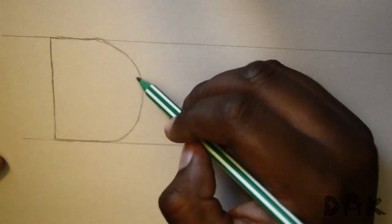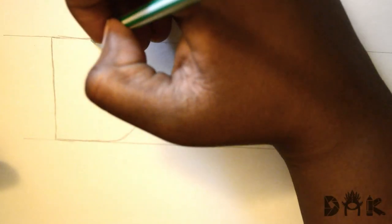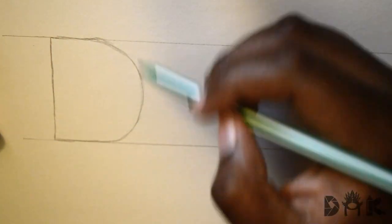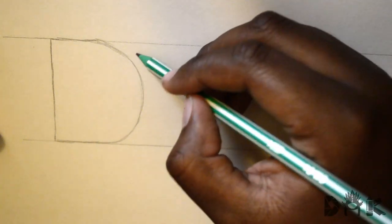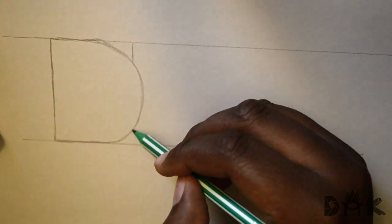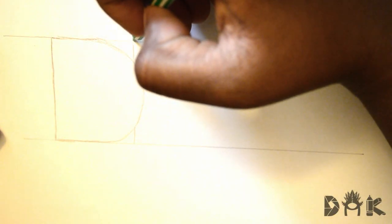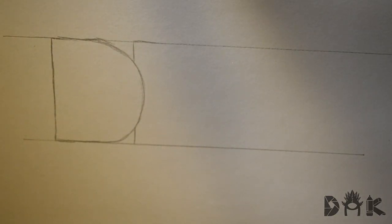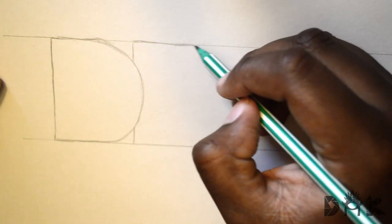So there's the letter D. Make sure it's light, don't press down too hard. It's gonna be our guidelines for the rest of our letters. We're gonna have them overlap each other so we're just gonna draw the straight line down for the R in between the D.